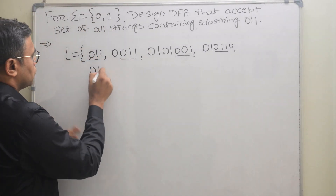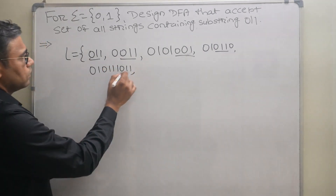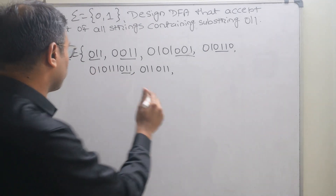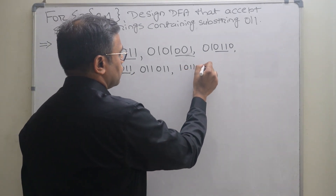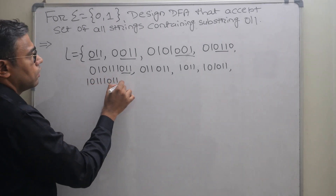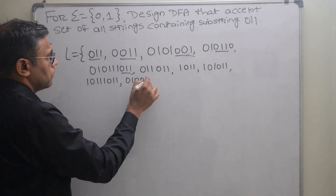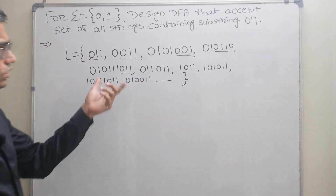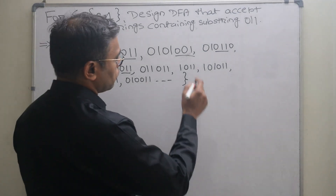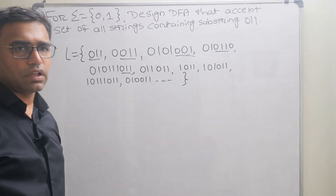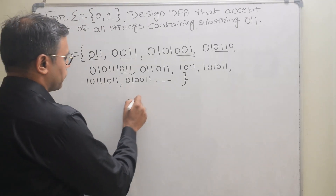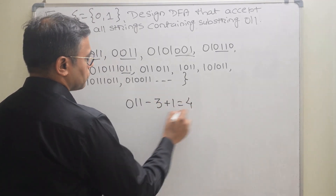Examples include 010110, 10110, 101011, and so on — there are many combinations. Now, how do we determine the number of states? In a substring problem, the number of states is always the length of the substring plus one. Here the substring length is 3, so the number of states is 3 + 1 = 4.